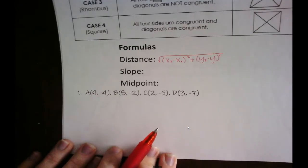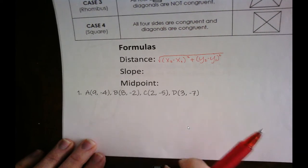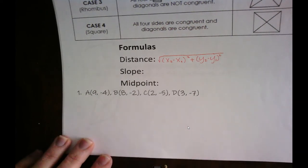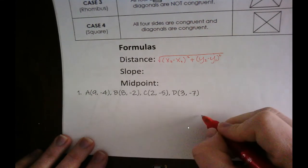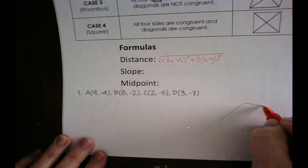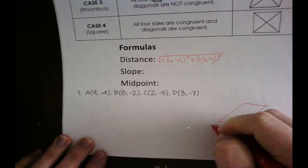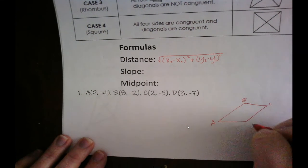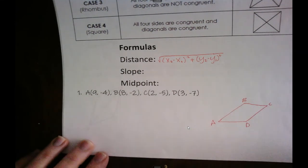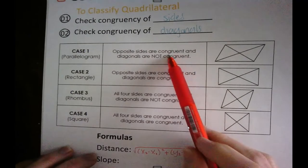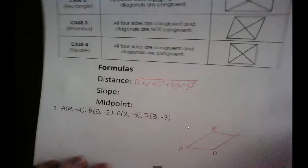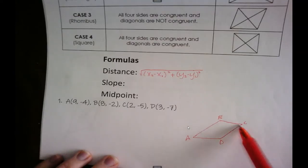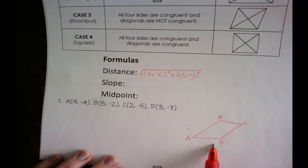So we have these four points, and I will give you some graph paper so you can actually graph it out. It's going to look something like this with points A, B, C, D. We want to check the distances because opposite sides are congruent, or all four sides are congruent. So we want to check the distance of all four sides first.